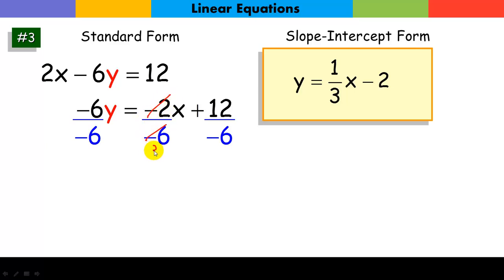Of course, this cancels to 1 over 3. 12 divided by negative 6 is 2. And I get my linear equation in slope-intercept form. Notice my slope is 1 over 3, and my y-intercept is considered negative 2.